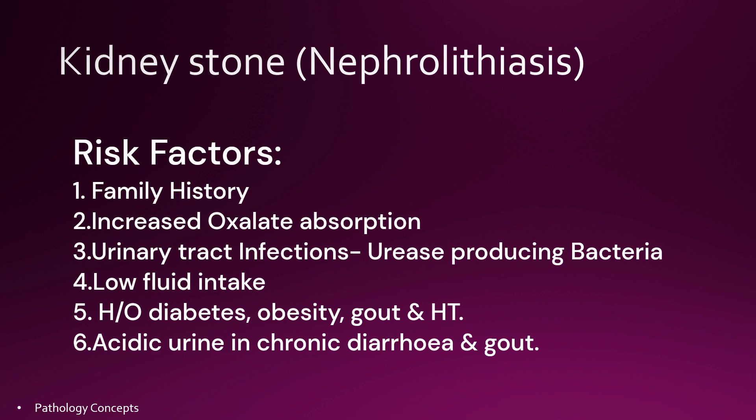A family history of kidney stones increases the risk by 2.5 times. Increased enteric oxalate absorption, typically due to malabsorption, leads to increased formation of calcium oxalate crystals. Urinary tract infection alters urinary pH in the setting of urease-producing bacteria, thus producing struvite crystals. Low fluid intake, history of diabetes, obesity, gout, and hypertension, and acidic urine which promotes uric acid formation in the setting of chronic diarrhea and gout.